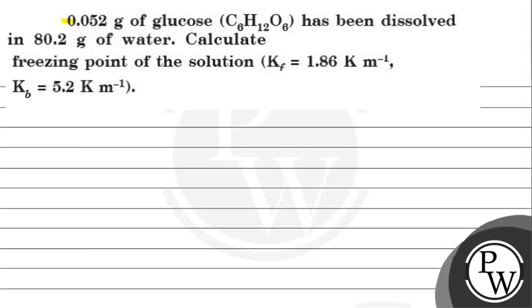So let's read this question. 0.052 grams of glucose, molecular formula C6H12O6, has been dissolved in 80.2 grams of water. Calculate freezing point of the solution. Kf equals 1.86 Kelvin mole inverse and Kb is 5.2 Kelvin mole inverse.